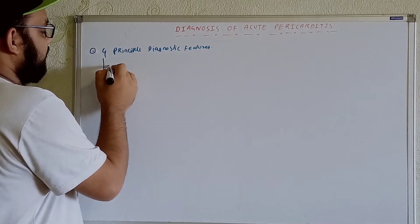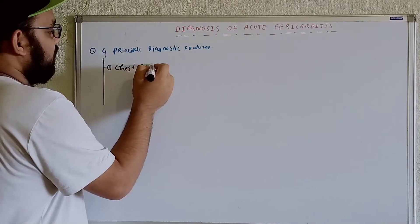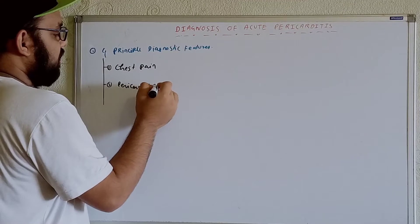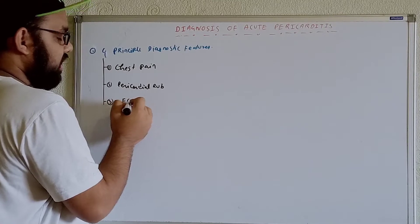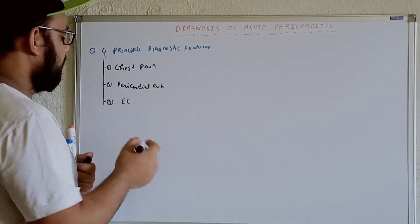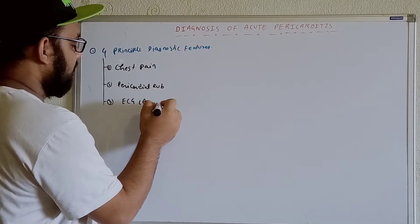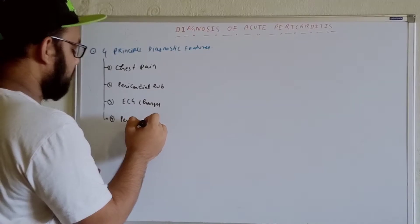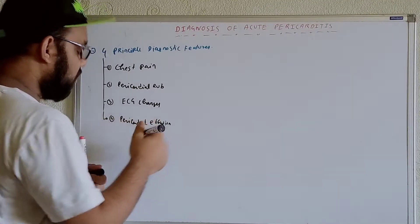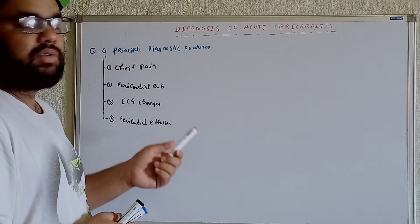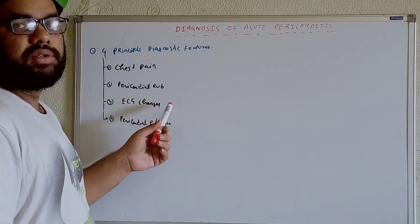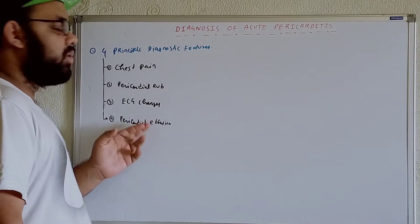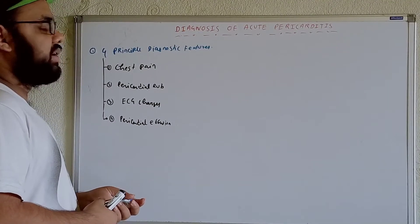The first feature is chest pain. Along with that, we get pericardial rub. Third, we get ECG changes. And fourth, we get pericardial effusion. Among these four features, if we get any combination of two, then we can make the diagnosis of acute pericarditis. So any two of these four features confirms acute pericarditis.